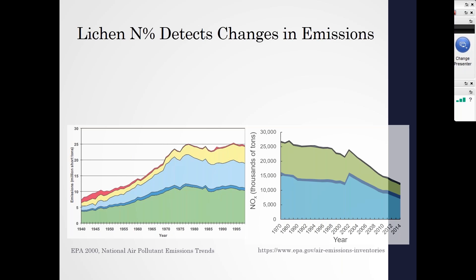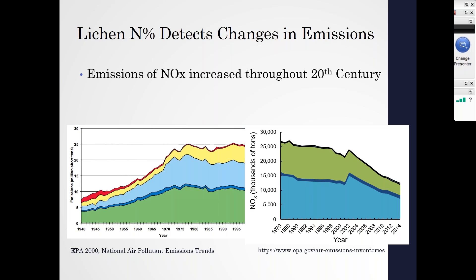It's at that plateauing where we begin to see lichen nitrogen content peak. Then it stays plateaued through the 1990s and really begins to decrease post-2000. That very much matches when and how we see lichen nitrogen content peak across our regions through time and then all regions seeing a decrease by the 21st century. Those decreases occur post-1990.